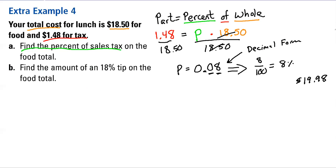Okay, so whenever we give a tip, we don't typically want to include the tax in there. We just want to give the tip based on what the meal cost. So we want to find an 18% tip on the food total. So once again, I'm going to use this idea. My part is equal to some percent of my whole.